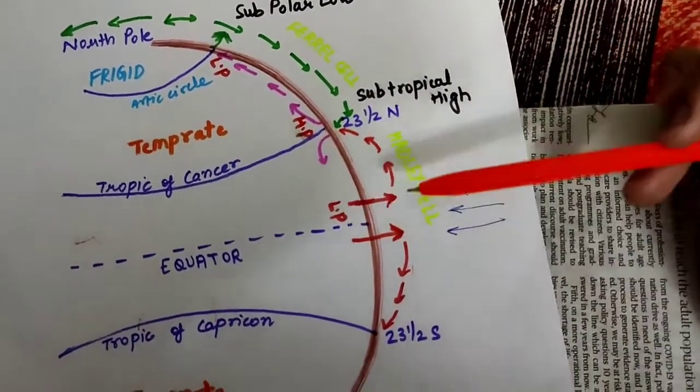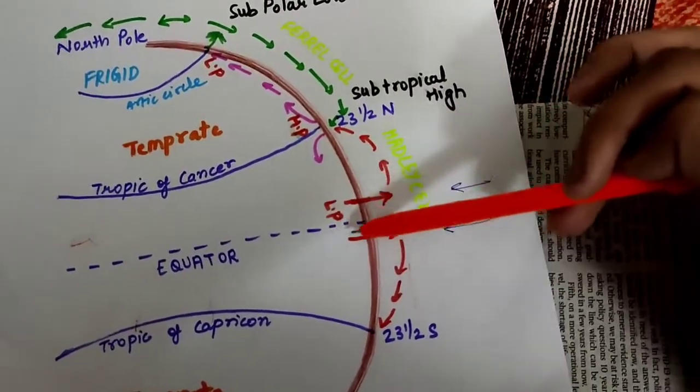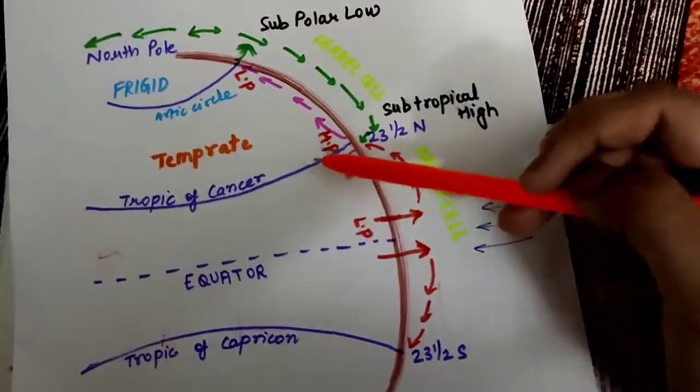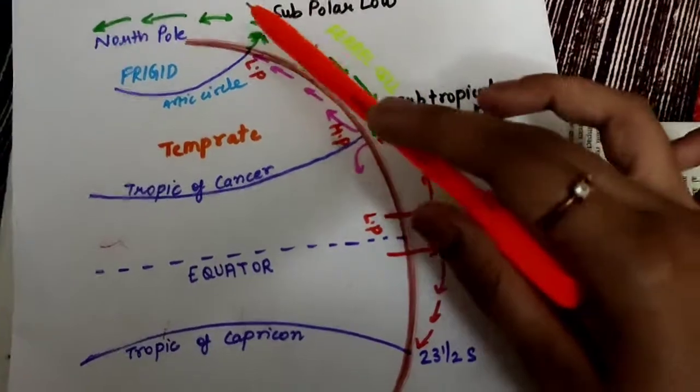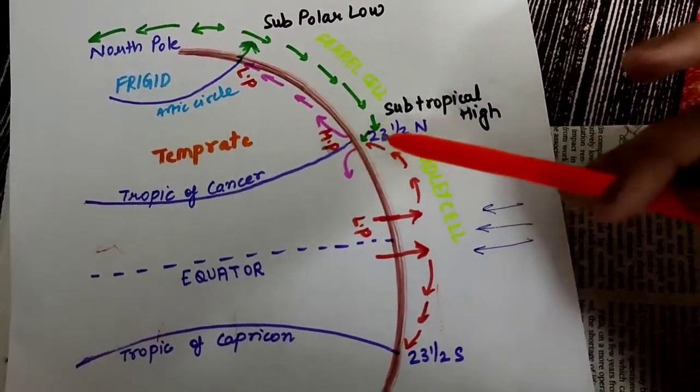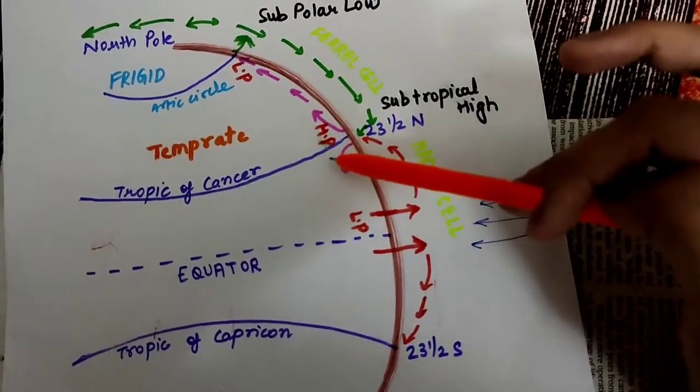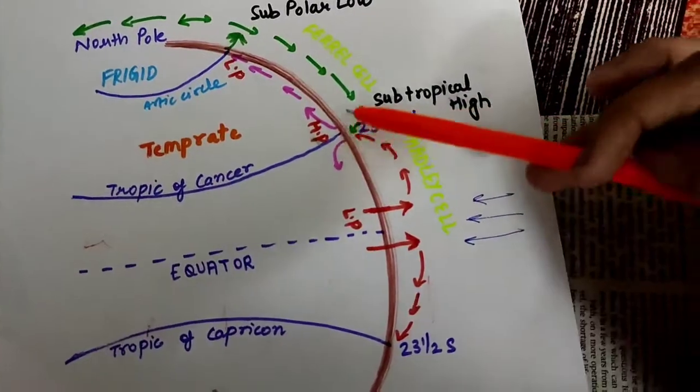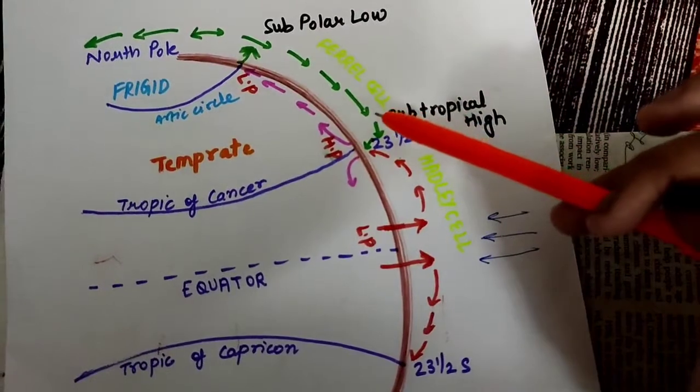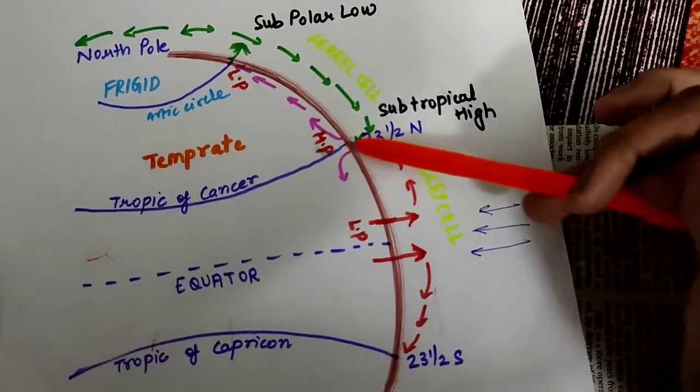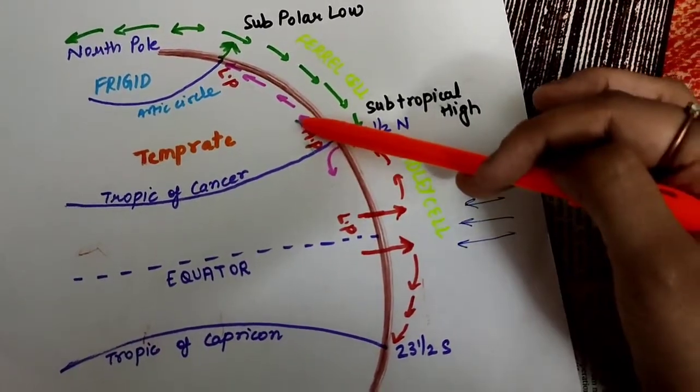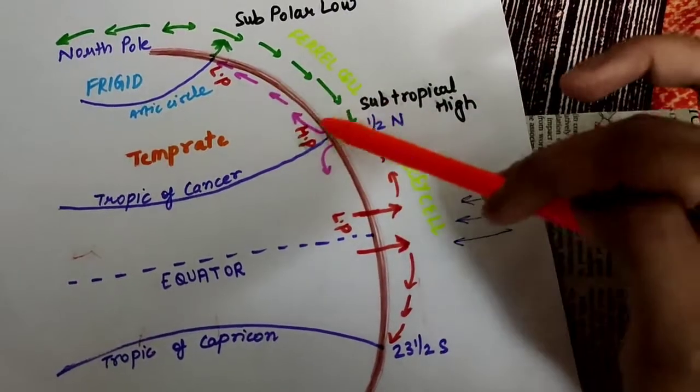Now what is happening in the frigid zone? Since this air which gets converged here starts to move in both directions again, these are surface winds because they are not moving at a height. They start to move like this and hence a loop is created here, a cell is created here. Some amount is going here, some amount is going here.